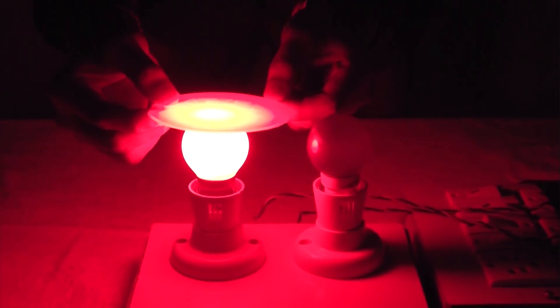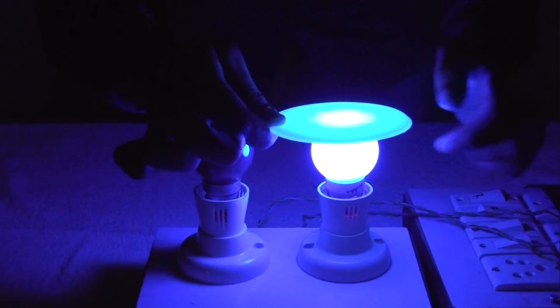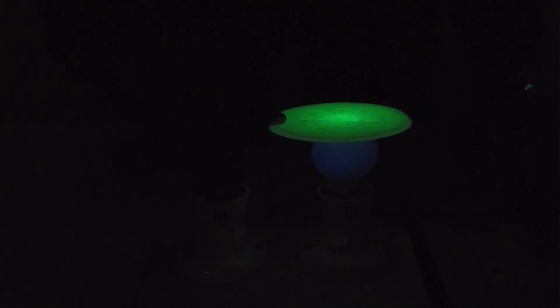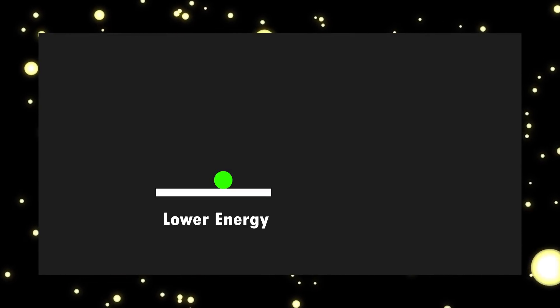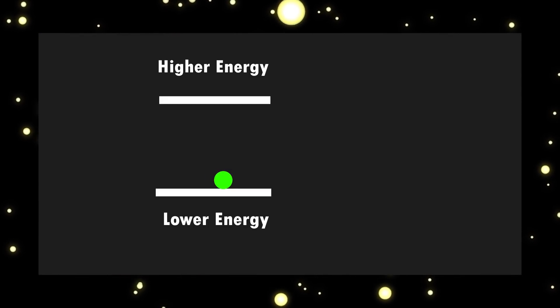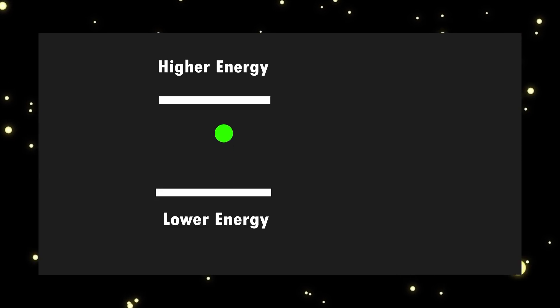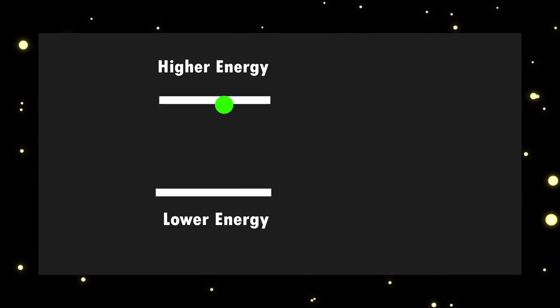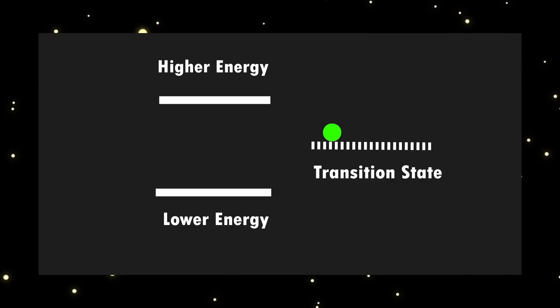The particle nature of light can be demonstrated with a simple experiment. If we shine a red bulb on a phosphorescent screen, nothing spectacular happens. But if you use a blue bulb, the sheet starts to glow in the dark. When light hits the sheet, its electrons get excited to higher energy states, and while coming back, get trapped in a transition state, which leads to the emission of the characteristic glow.